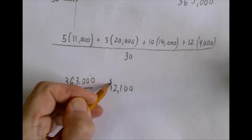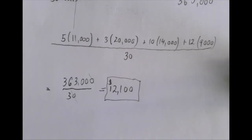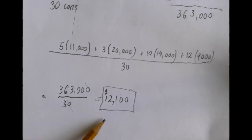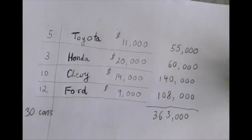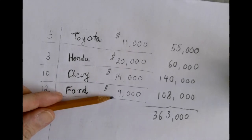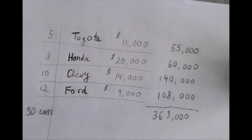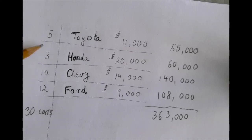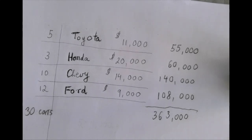That would be the average value of these cars. This regular average flattens out the value — if you had 30 identical cars worth the same amount, this is how much each should be worth. It's on the low side, but it's still possible because it's between 9,000 and 20,000. The most expensive cars we don't have a lot of, so a lot of the data is on the lower end.